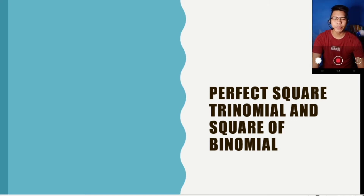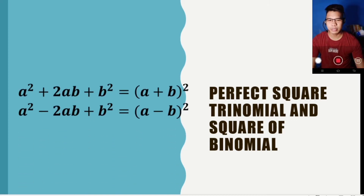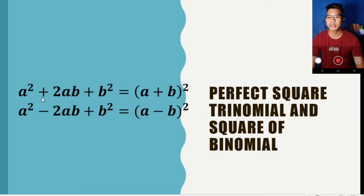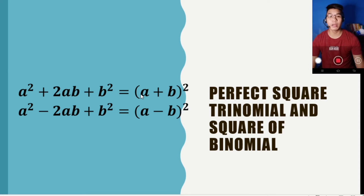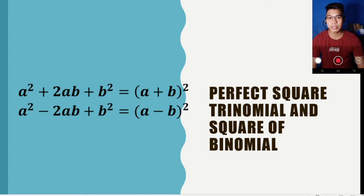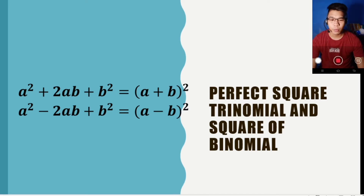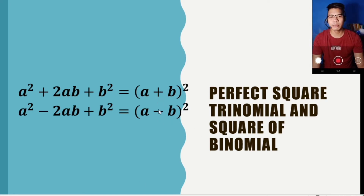Today we'll be dealing with the perfect square trinomial and the square of binomial. On the left side we have the perfect square trinomials. A squared plus 2ab plus b squared can be converted as a square binomial, equivalent to quantity a plus b, quantity squared. We also have a squared minus 2ab plus b squared, which can be factored as quantity a minus b, quantity squared. The operation on the square binomial depends on the sign of the middle term of the perfect square trinomial.